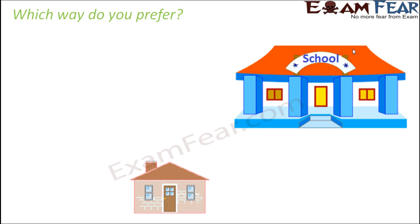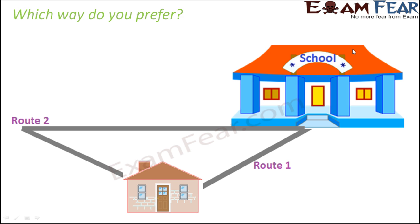Definitely something related to triangles. You might be wondering what I'm trying to show you on the screen. There's a school and there's a home. Let me ask you a very simple question from your day-to-day life. There are two possible routes, route number one and route number two, to return from your school to your home.